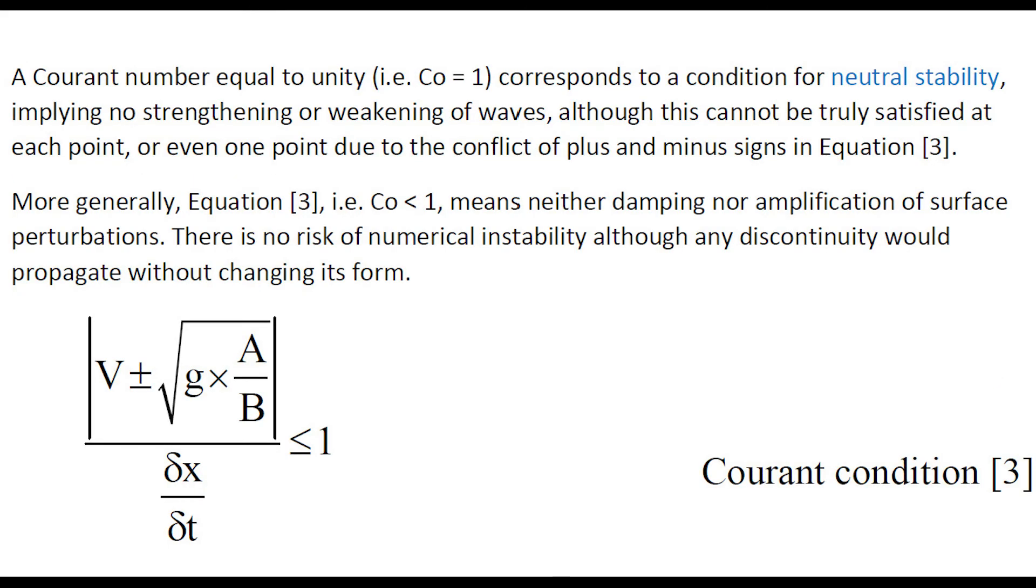A Courant number equal to unity corresponds to a condition of neutral stability, implying no strengthening or weakening of waves, although this cannot be truly satisfied at each point or even one point due to the conflicting of plus or minus signs in equation 3. More generally, the Courant condition means neither damping nor amplification of surface perturbations. There is no risk of numerical instability, although any discontinuity will propagate without changing its form.